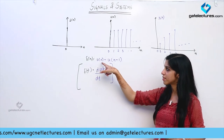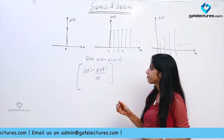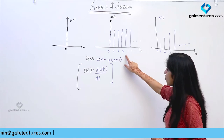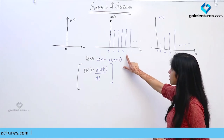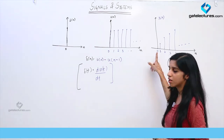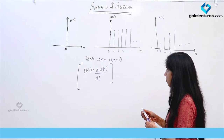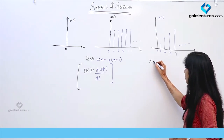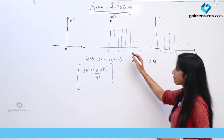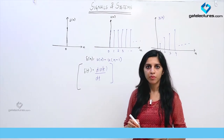This is how you represent the unit impulse function. Now, if I want to express the unit ramp function as a summation of unit step signals, let me work through that.